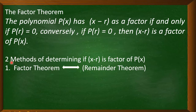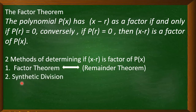There are two methods of determining if x minus r is a factor of p of x. The first one is the factor theorem, and of course, if we are going to utilize the factor theorem, it includes the remainder theorem. The second one is we can also determine if x minus r is a factor through synthetic division. I'll be showing you both methods.